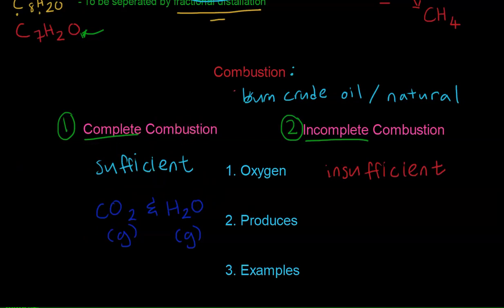Whereas in an incomplete combustion, you will get a variety of products. For example, you will get carbon, carbon monoxide or carbon dioxide. You really won't know. So it's actually an or. And you will also get water vapor.